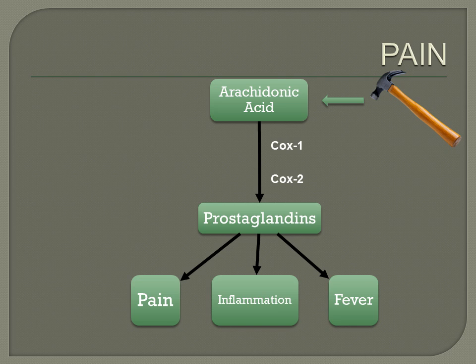COX and arachidonic acid combine and create prostaglandins. With these prostaglandins, three things happen: we have pain, inflammation, and fever. So it makes sense that many of our medications target COX, which interferes with prostaglandin production — so these medications can relieve pain, inflammation, and fever. Think about the functions of COX: can you think of any side effects that might happen if COX is inhibited?